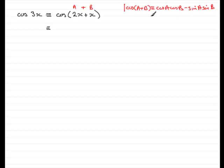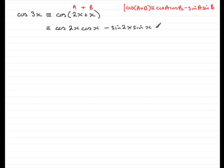So if we know that, we can substitute in for our a's and b's. We've got cosine of 2x for cos(a), then cos(b) becomes cos(x). And then we have minus sine of a, which is 2x, times sine of b, which is sine(x). Now, cosine of 2x we should know is the same as 2cos²(x) minus 1, which gets that in terms of cos(x).